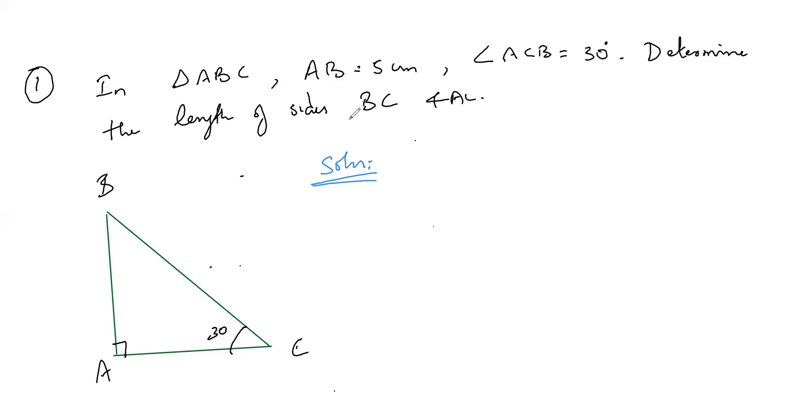So hypotenuse length I need. Then adjacent side length I need. So I need to find the length of BC and AC. And they are given AB is equal to 5 centimeter.